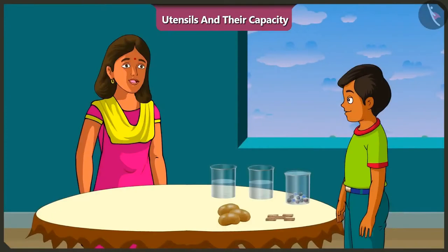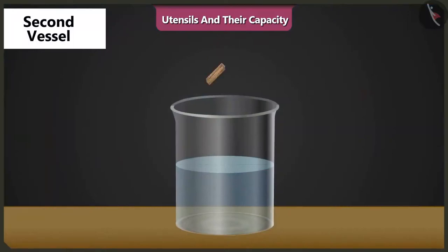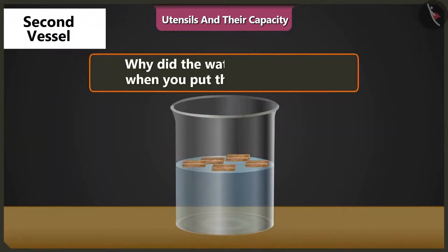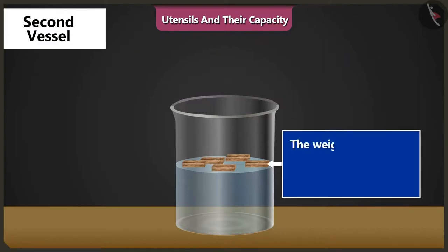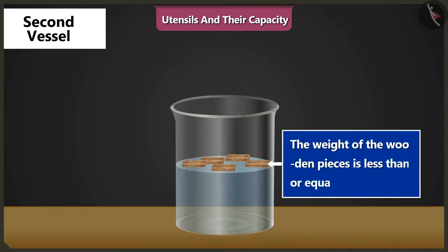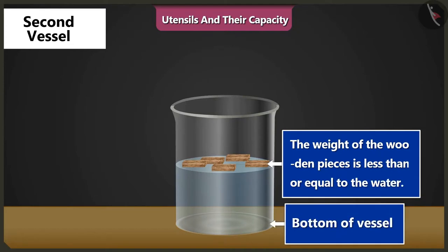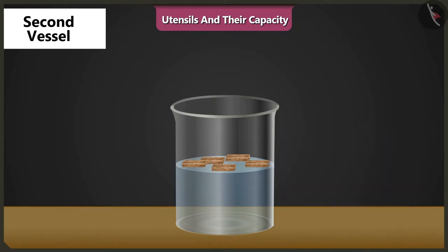Well said, Mishtu. Now put these pieces of wood in another vessel half filled with water. Let me see. Hey, what is this? Why did the water not come up when we dropped in the wooden pieces? Because the weight of these pieces of wood is less than or equal to the weight of water in the vessel, so these pieces did not sink to the bottom of the vessel. This is why the water did not come up.